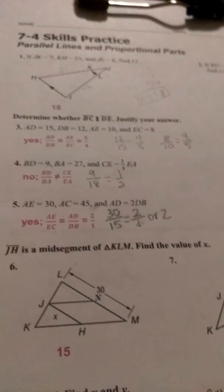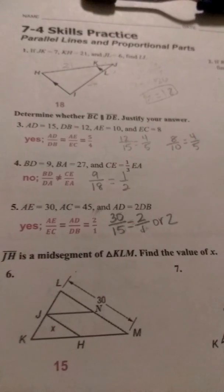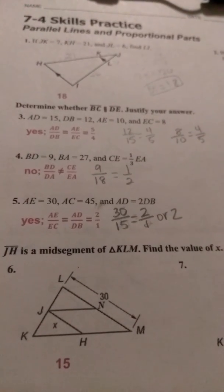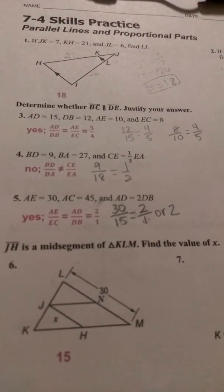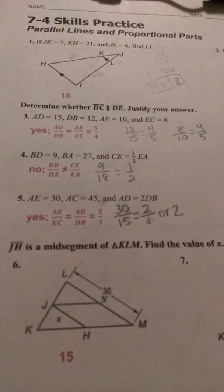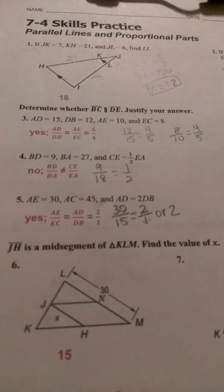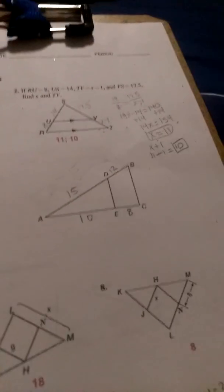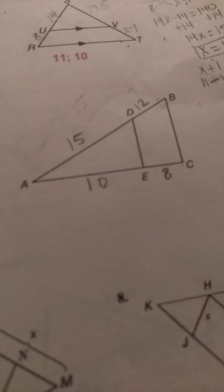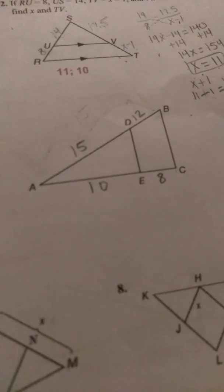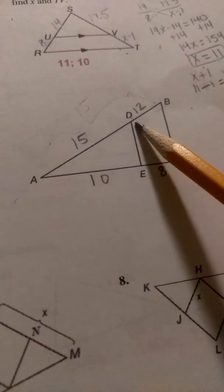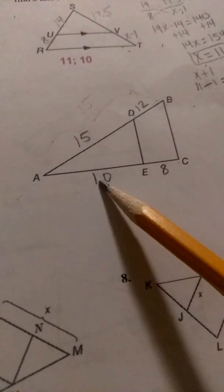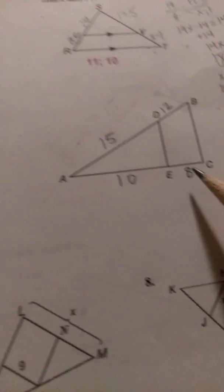On the 3 through 4, we're told to use the figure to the right, and we are given the information that segment BC is parallel to DE, which tells us that we can use the ratios. And here's my figure. I've labeled the first one with the information that has been given to us. It tells us that DB is 12, AD is 15, AE is 10, and then EC is 8.